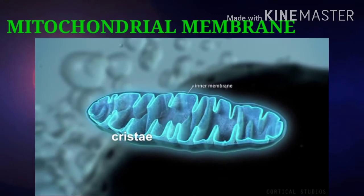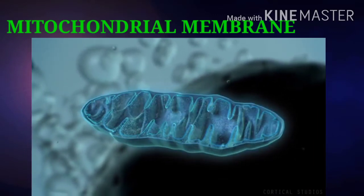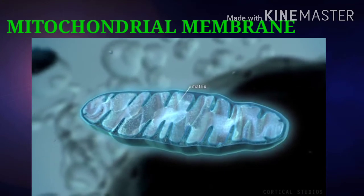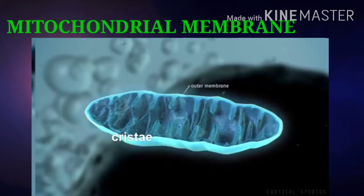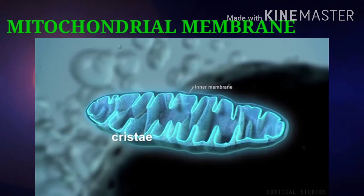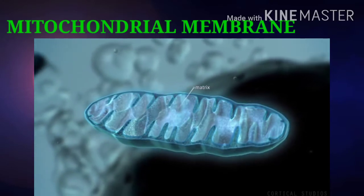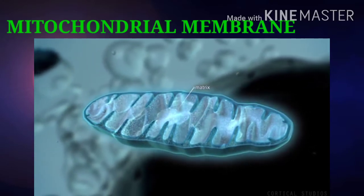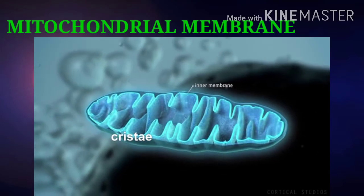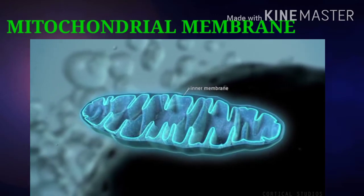The inner membrane encloses the mitochondrial matrix. The shape of cristae is variable in mitochondria of different species. For example, in fungi, cristae are plate-like. In Euglena, cristae are vesicle-shaped.